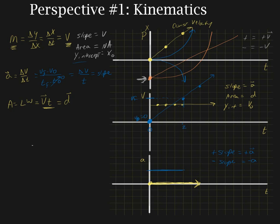We've talked about the slope of the acceleration graph — basically it's always going to be constant. If you have a non-zero slope, the slope is equal to a quantity called the jerk. The jerk is what happens when you're stopped at a red light and step on the gas and it throws your head backwards. When you're just speeding up and your head feels pressed backwards, that is acceleration. The jerk is not something we're going to discuss.